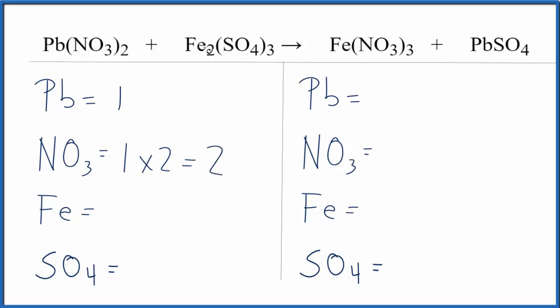On the reactant side, I have 2 iron, and again, I have a sulfate here, SO4 and SO4. I'm just going to say I have 1 sulfate and the 3 outside times that. So I have a total of 3 sulfate ions.